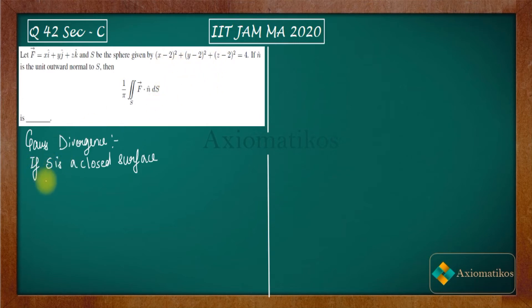So if S is a closed surface, what happens is this: f vector dot n cap dS is given by the volume enclosed by this surface. What is this V? The volume enclosed by this surface S. So it is equal to del dot f dV.